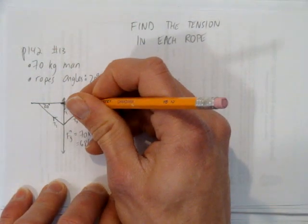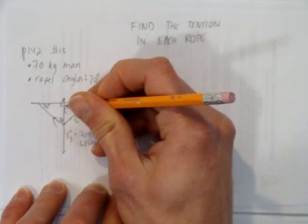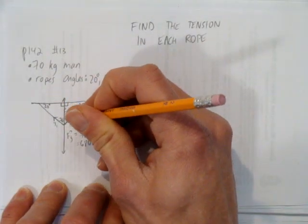There's a couple other things we know. If this is 20 degrees, we know this hits at 90 degrees. So this angle is 70. And if this is 25 degrees, this hits at 90 degrees. So this angle is 65.